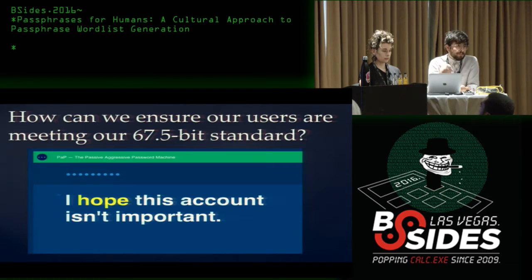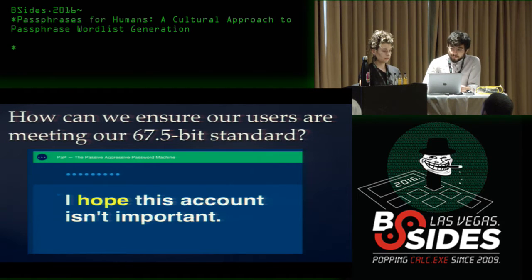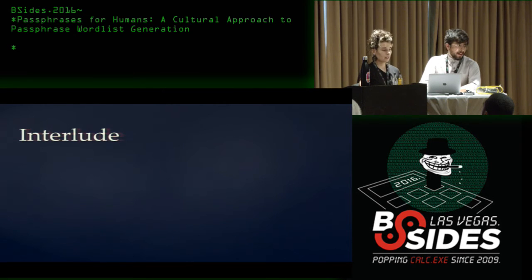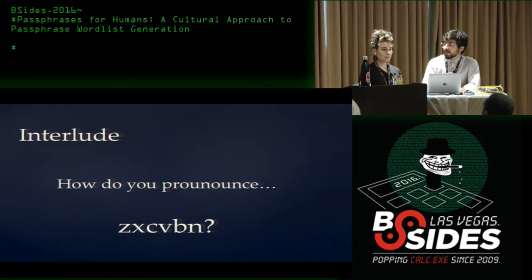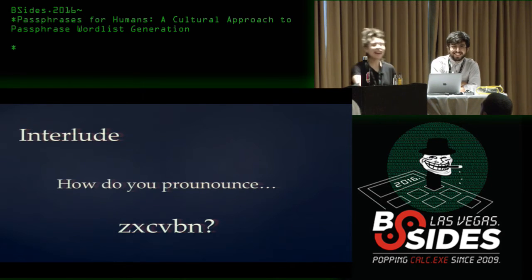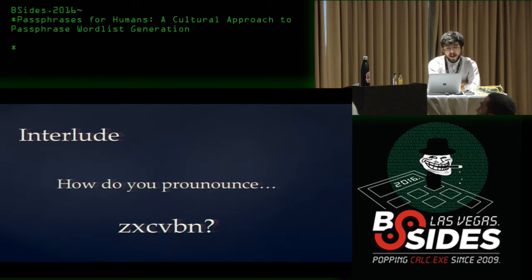So the question is: how do we ensure our users are meeting this standard? One approach is to use things like password meters. This is one of my favorites — the passive-aggressive password meter — where as you're entering characters it tells you just how bad your password actually is. We were given some treats and told we can give them out however we please, so — does anyone know how to pronounce 'zxcvbn'? Whoever pronounces this gets a treat. I've been calling it 'zixbin' this whole time — we can call it the Dropbox method though.